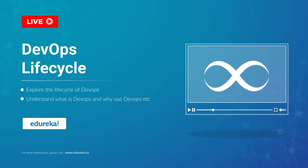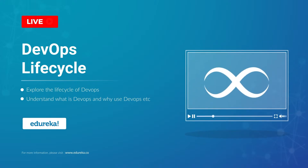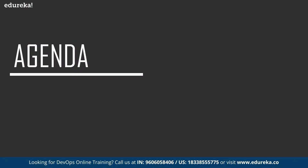Before we move any further, let us have a quick look at the agenda for today's session. We will begin our discussion with the topic 'Why DevOps,' covering a few pointers about the history of DevOps. The second topic is 'What is DevOps,' and we will see how DevOps solves the problems of previous software development models. The final topic is the main topic of this session: the DevOps lifecycle.